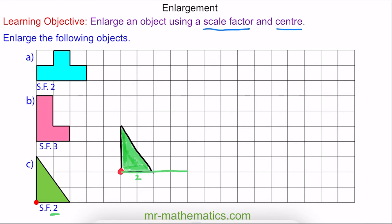This length of 3 is enlarged to 6, but again it is enlarged from the centre. And then finally this diagonal length I can use to close the shape. So now I have created the enlarged image of the object in question C.